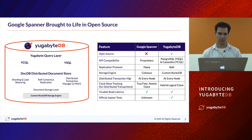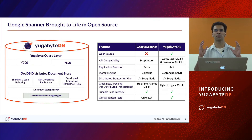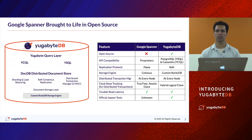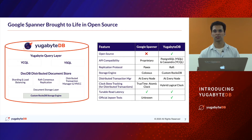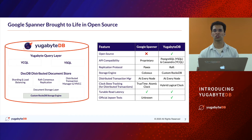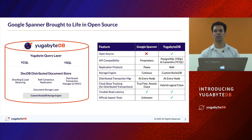Looking at a high-level architecture, you can think of YugaByteDB as being split into two logical portions. The upper half is the language layer — the YugaByte query layer — which is pluggable and currently supports the Apache Cassandra-compatible YCQL API and the PostgreSQL-compatible YSQL API. All of that runs on top of a common lower half, which is the storage layer of YugaByte — a document-oriented storage layer built along the lines of Google Spanner.